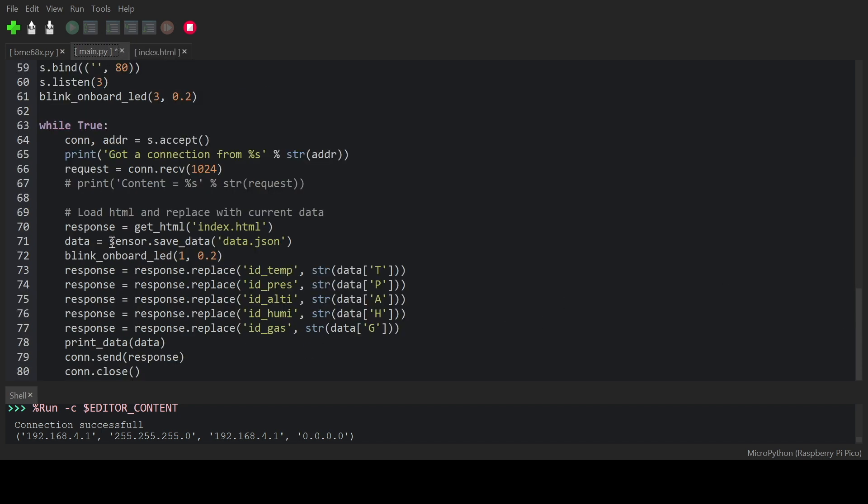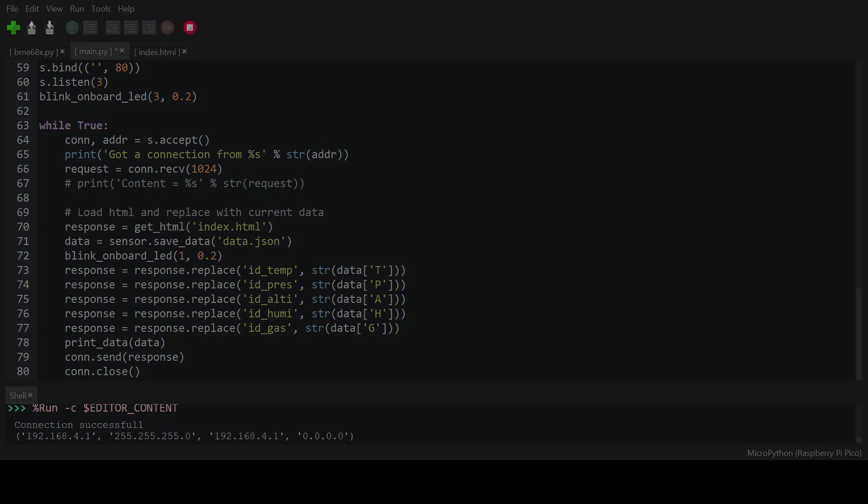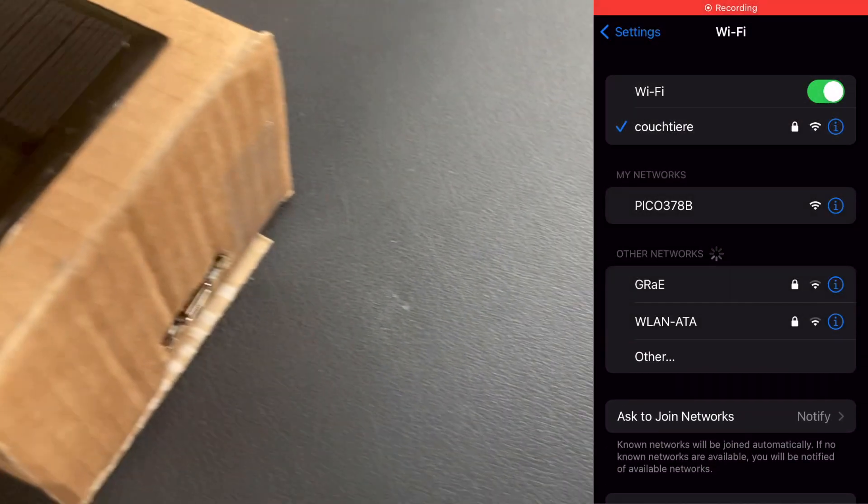Back in the main.py file, we just send the response and close the connection. The main.py file will run automatically if the Pico W is powered up, but we need to run it once in the Thony IDE to see the IP address of the Pico W. If the Pico W is powered up, wait until it blinked three times.